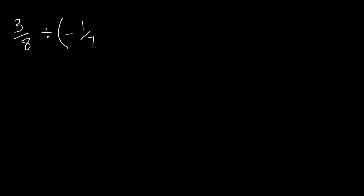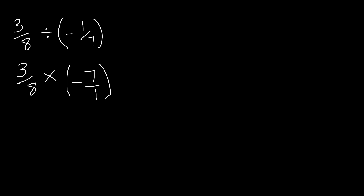Now let's do another problem. We have 3 over 8 divided by negative 1 over 7. Now whenever you divide fractions, you use the method called keep-change-flip. We keep the first fraction as 3 over 8, change the division sign to multiplication, and flip the second fraction: negative 1 over 7 becomes negative 7 over 1. Now multiply: 3 times 7 gives us 21, and 8 times 1 gives us 8. We bring the negative sign over because when you multiply two integers with different signs, you get a negative product. So our answer is negative 21 over 8.